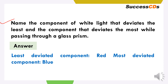Name the component of white light that deviates the least and the component that deviates the most while passing through a glass prism. Jo light least deviated hoti hai wo hoti hai red light, aur jo most deviated hoti hai wo hoti hai blue light. Red light kyunki less deviated hoti hai, isi vajay se yeh sabse zhaada less scattering show kar paati hai — yeh itni scatter nahi hoti hai.